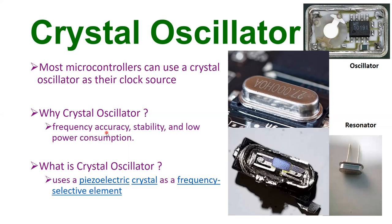The answer is: why crystal oscillators? First, frequency accuracy — it is very accurate in frequency. If you want to provide a one megahertz clock to a microcontroller, that frequency will not deviate to, say, 1.1 megahertz. Second, stability — the crystal oscillator clock is very stable over time, due to temperature variations, vibrations, noise, pressure, and so on. Third, it provides low power consumption.